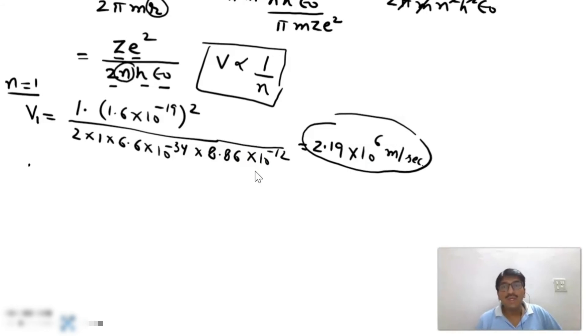And if we determine the ratio of V₁ and c, V₁ upon c, it becomes 2.19 × 10⁶ upon 3 × 10⁸, and it becomes equal to 1 upon 137. The ratio of velocity of electron in first orbit and velocity of light is equal to 1/137. This is constant and this ratio is known as fine structure constant.